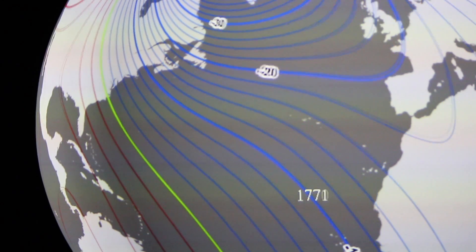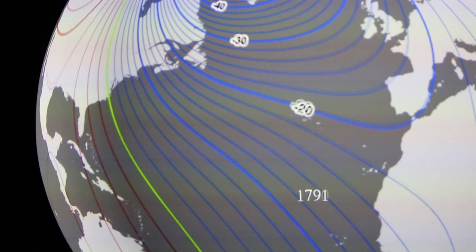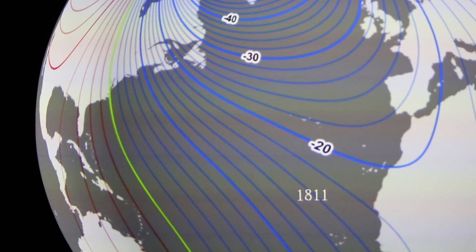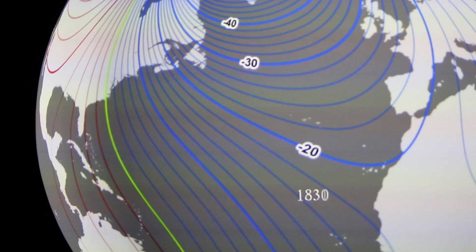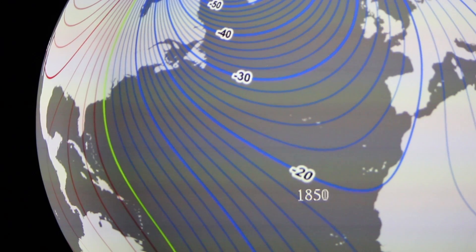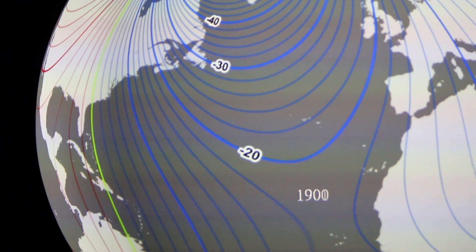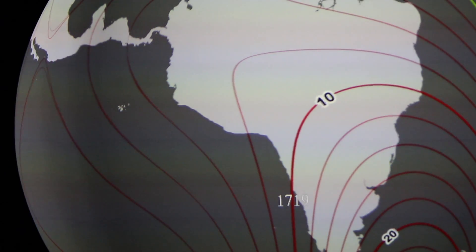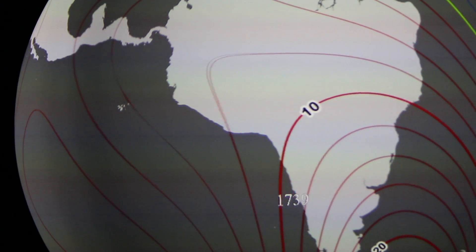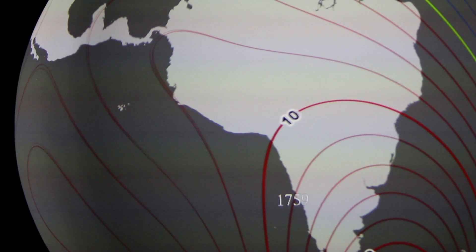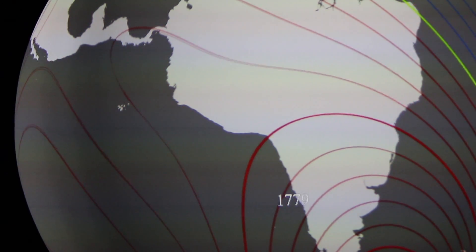The red and the blue just indicate the different conventions. If you're standing in an area where the blue lines are, we define that as negative declination, which simply means that your compass needle would be pointing toward the west of true north. And if you happen to be standing in one of the red regions, your compass needle would point eastward of true north. We define eastward as positive declination and westward as negative.